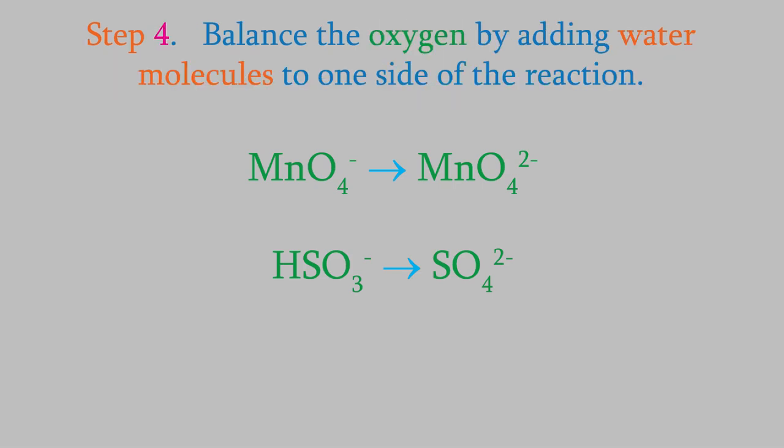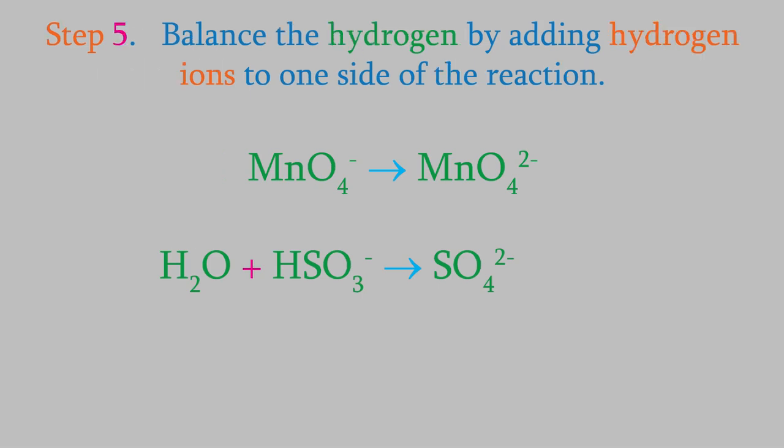In step 4, we add water molecules to the reactions in order to balance the oxygen. In the reduction reaction, there are 4 oxygens on both sides, so we don't need to change that reaction. In the oxidation, there are 3 oxygens in the bisulfite and 4 in the sulfate, so we need to add a water molecule on the left side. Now for step 5, in which we balance the hydrogens by adding H plus ions. There are no hydrogens in the reduction reaction, so we can skip that one. There are 3 hydrogens on the left in the oxidation reaction and none on the right, so we'll add 3 H plus ions to the right side.